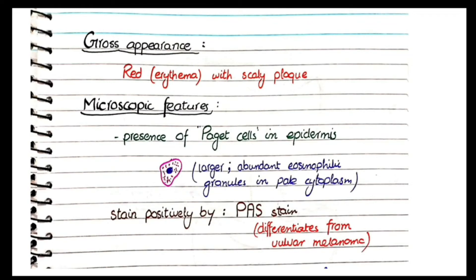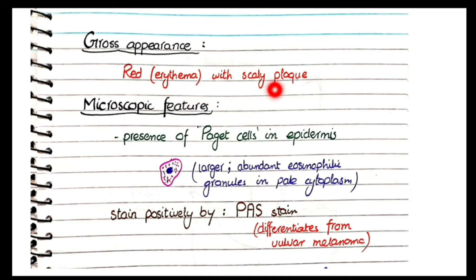Regarding gross appearance, Paget's disease of the vulva presents as a red erythematous lesion with a scaly plaque. You will see a red-colored area on the skin of the vulva along with a scaly plaque.